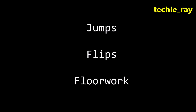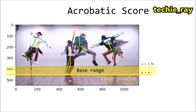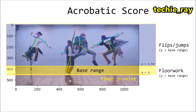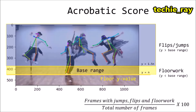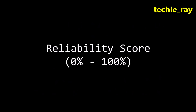Third, the computer produces an acrobatics score to reflect any flashy jumps, flips, or floor movements. The computer finds the y-intercept of the floor line and creates a base range. If the y-coordinates of a member's feet are above the base range, that suggests a jump or flip. If the y-coordinates of the member's hands are within the base range, that suggests a floor movement. The computer tracks the proportion of these frames out of the total — anything near 30 is considered exceptional.